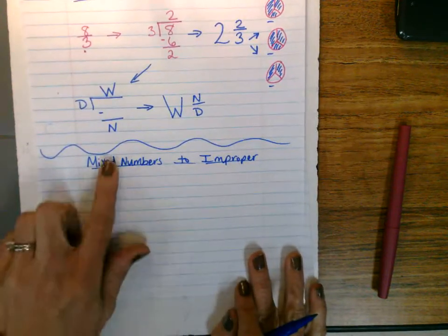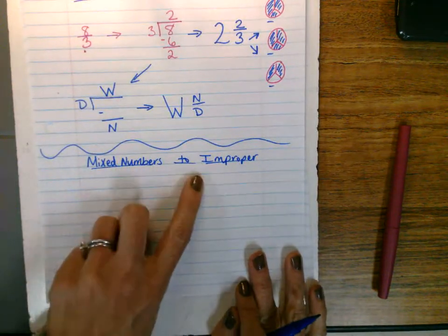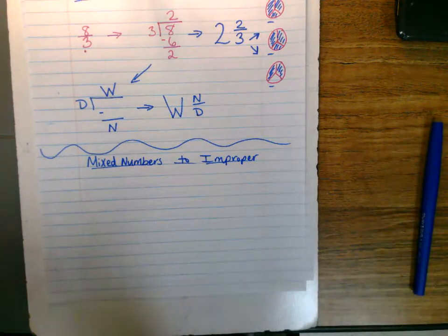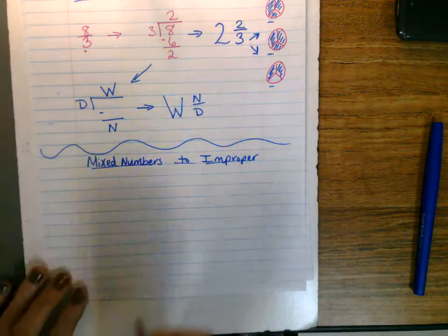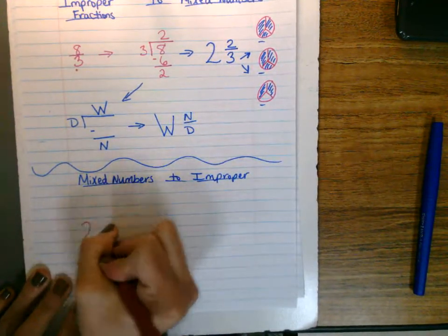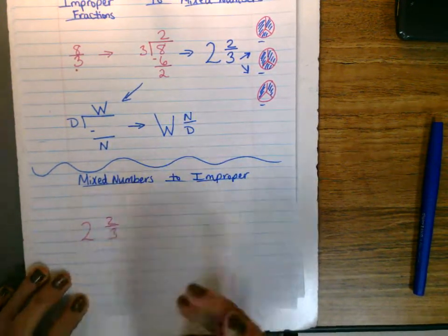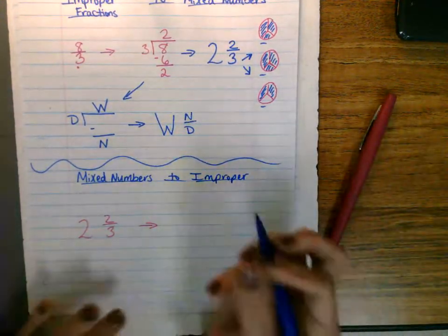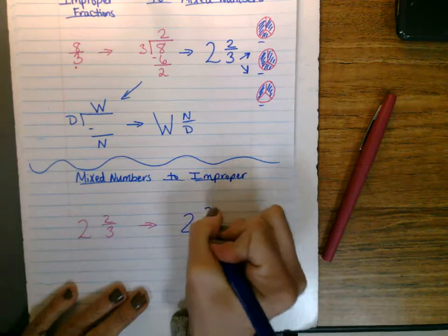Now let's just reverse this, and let's go from a mixed number to improper, and I'm sure this is the same strategy you probably learned. So I'll just take the same mixed number, two and two-thirds. And I'll just rewrite it, so two and two-thirds.